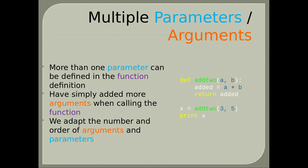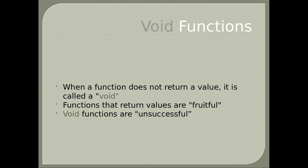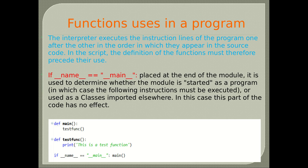When a function does not return a value, it is called void. Functions that return values are fruitful. Void functions are unsuccessful. The interpreter executes instructions one after the other in the order they appear in the source code; the definition of functions must therefore precede their use. If __name__ == '__main__', placed at the end of the module, it is used to determine whether the module is started as a program, in which case the following instructions are executed, or used as a module imported elsewhere.